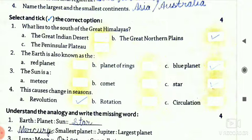Third question is, the sun is a. First option is meteor, second option is comet, and third option is your star. So your answer is C, star.